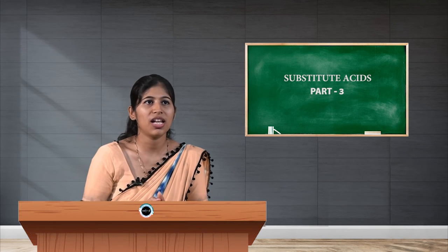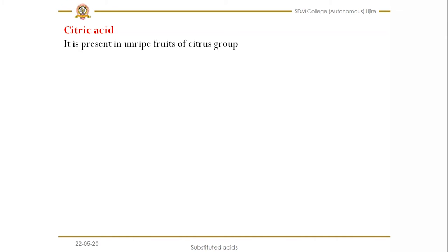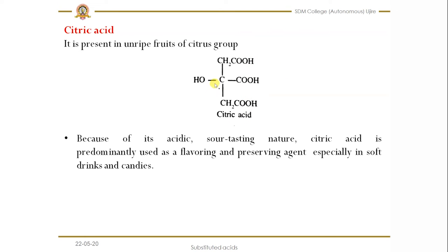The next example is citric acid, which is also a substituted acid. This is the structure of citric acid. It is an example of a hydroxy substituted acid — the hydroxy group in the carboxylic acid is where one hydrogen in the alkyl group is replaced by a hydroxy group. It is also an example of a tricarboxylic acid. Its IUPAC name is 2-hydroxy-1,2,3-propane tricarboxylic acid. Citric acid is naturally present in all kinds of citrus fruits like lemon and orange, and it has a sour taste because it is acidic.